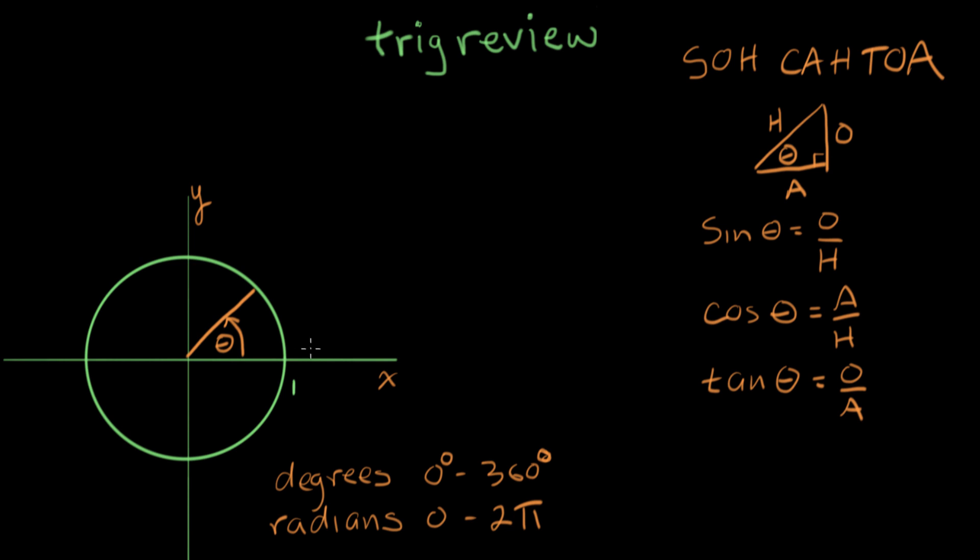So if I mark this out in degrees, here's zero degrees. Here's 90 degrees. Here's 180 degrees. This is 270. And when I get back to the beginning, it's 360 degrees. If I measure the same angles in radians, this will be zero radians.